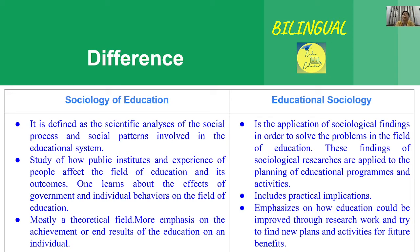So, educational sociology is the application of sociological findings, while sociology of education is the scientific analysis of social processes and social patterns operating within the educational system. Sociology of education is the study of how public institutions and the experiences of people affect the field of education and its outcomes. It is essentially a theoretical field.